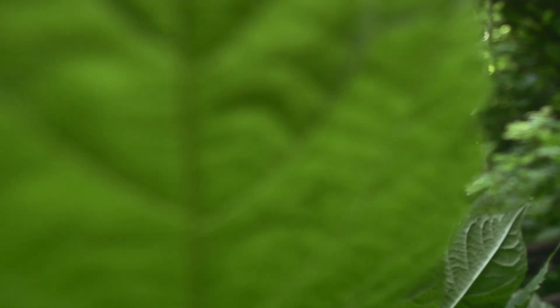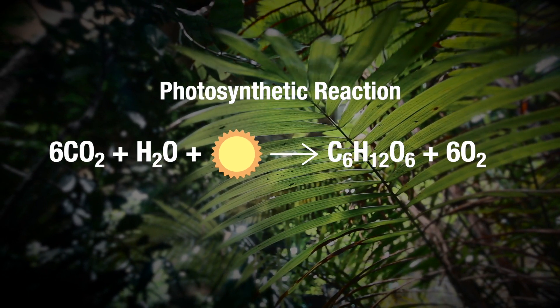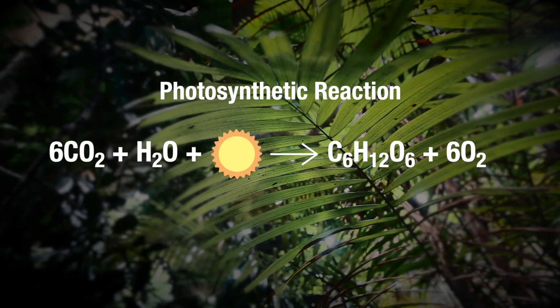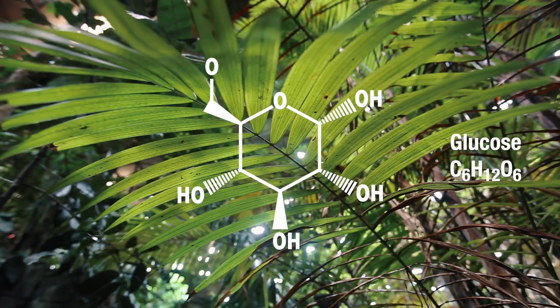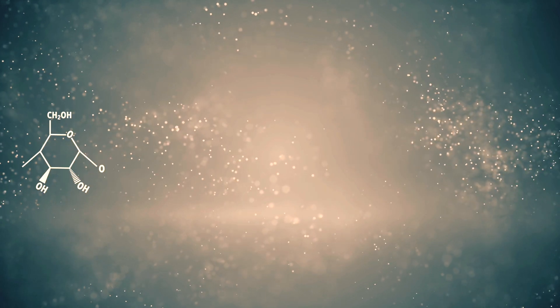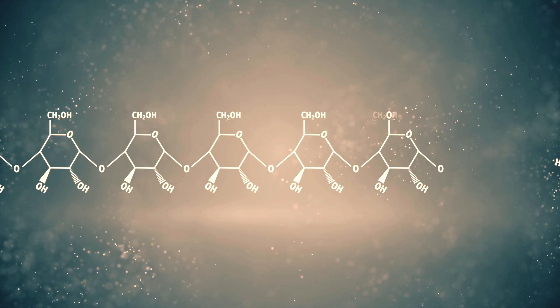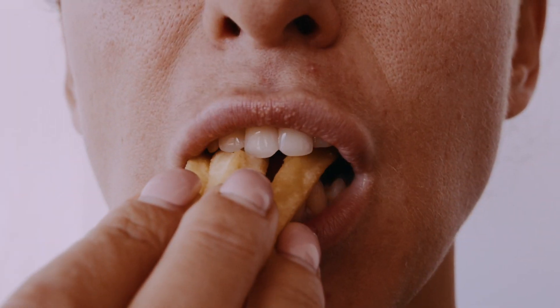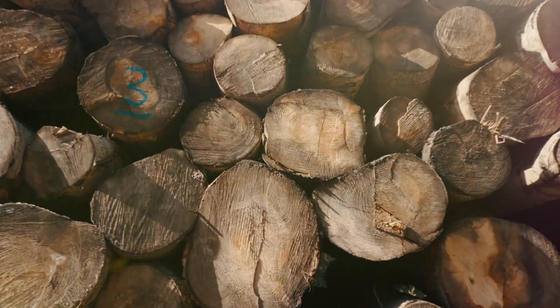When simplified, the reaction looks like this. Glucose is kind of like the Lego brick of life — it's a cyclic hydrocarbon, and several glucose molecules can be connected together to form, for example, starch and glycogen, which are energy reserves in plants and animals, or cellulose, which is like the scaffolding that makes up the mass of the plant.